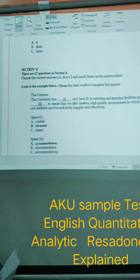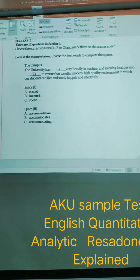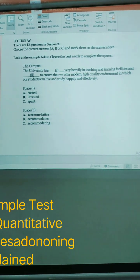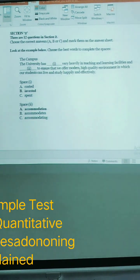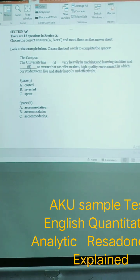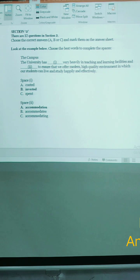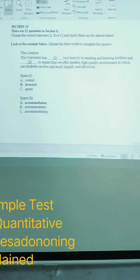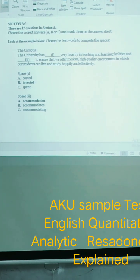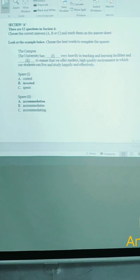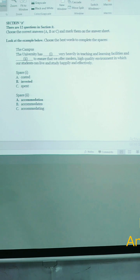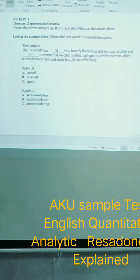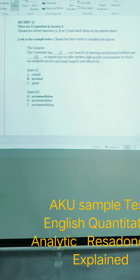Then we are moving to question number 2. Question number 2 says that the university has very heavily in teaching and learning facilities to ensure that we offer modern high quality environment in which our students can live and study happily. So the space is wasted, invested, spent is the first answer.